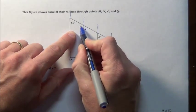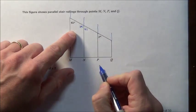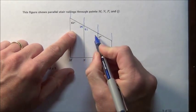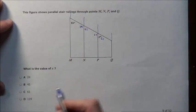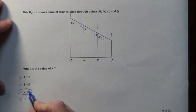If we wanted we could also have labeled that 119. We can pick those up and move them down here again, 119 and 61. Looks like that X is going to be 61 which is choice C.